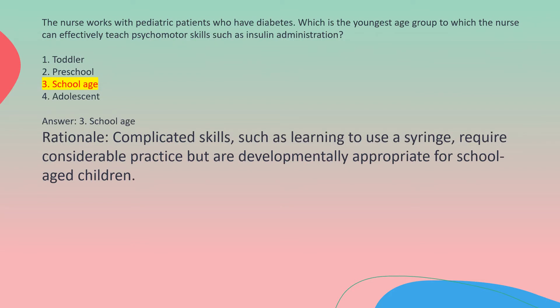Answer: 3. School-age. Rationale: Complicated skills such as learning to use a syringe require considerable practice but are developmentally appropriate for school-age children.